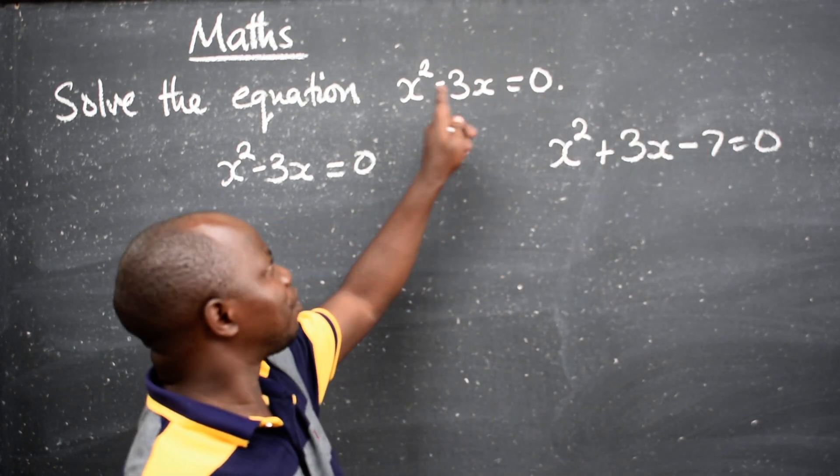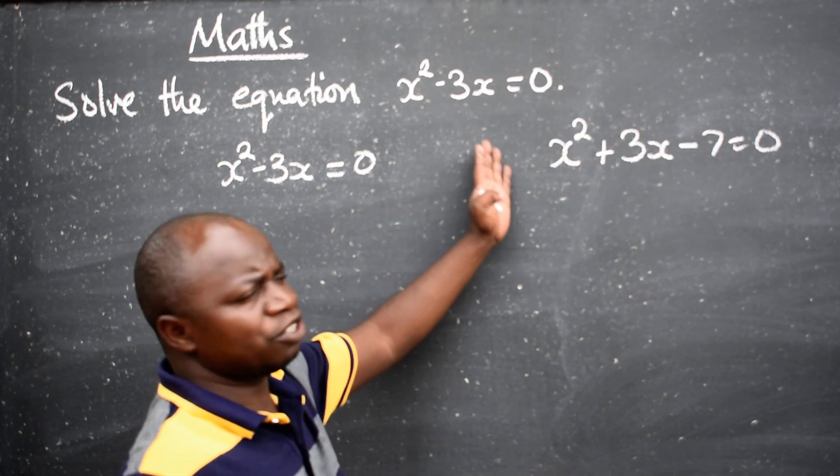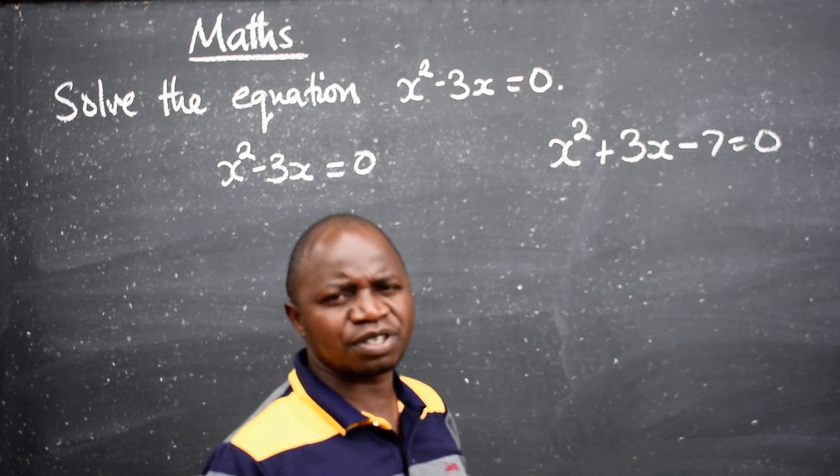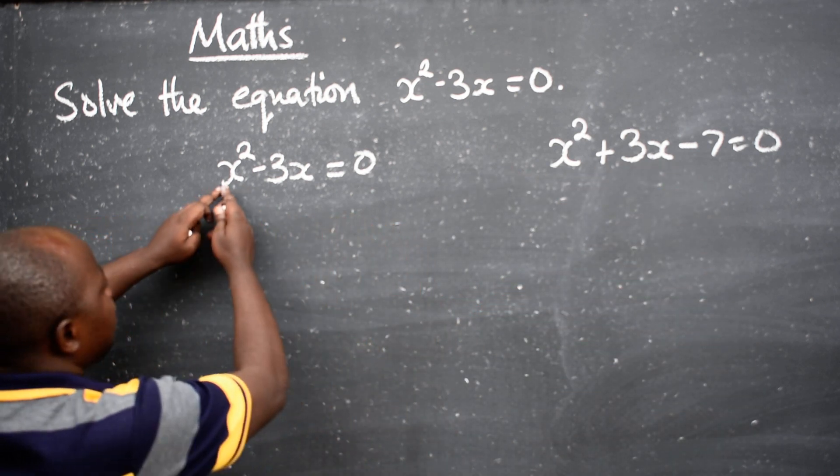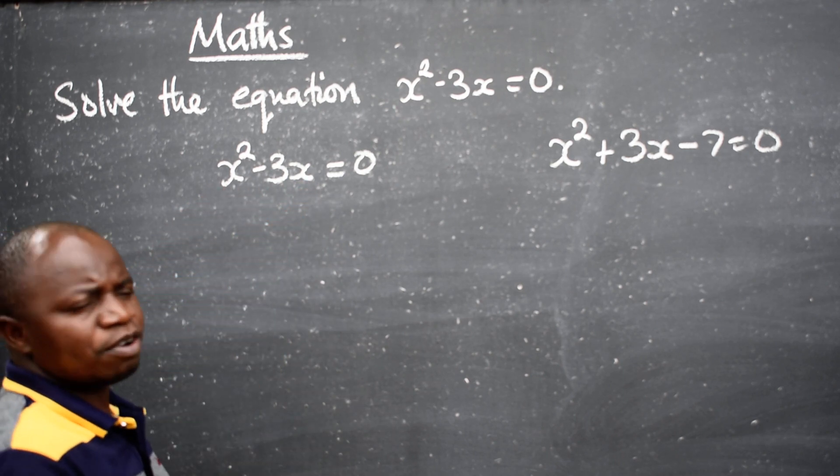When it comes to this with two terms, there is no point of using those methods that I have talked about. All you need to do is to factorize. Common factorization.